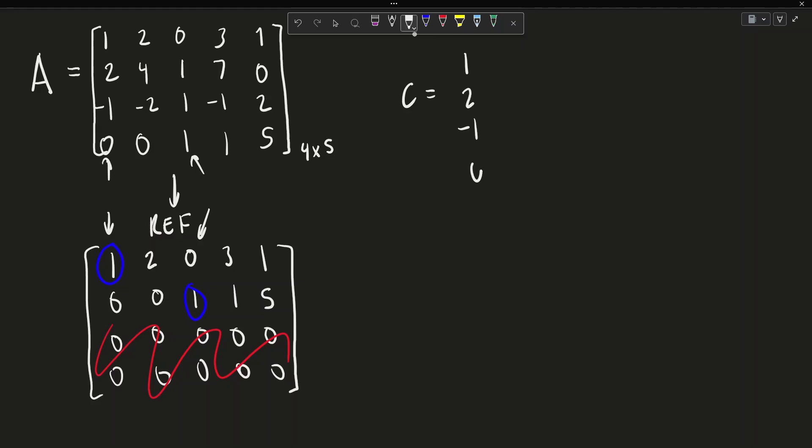So we have C is equal to [1, 2, -1, 0] and [0, 1, 1, 1]. So this is our matrix C.